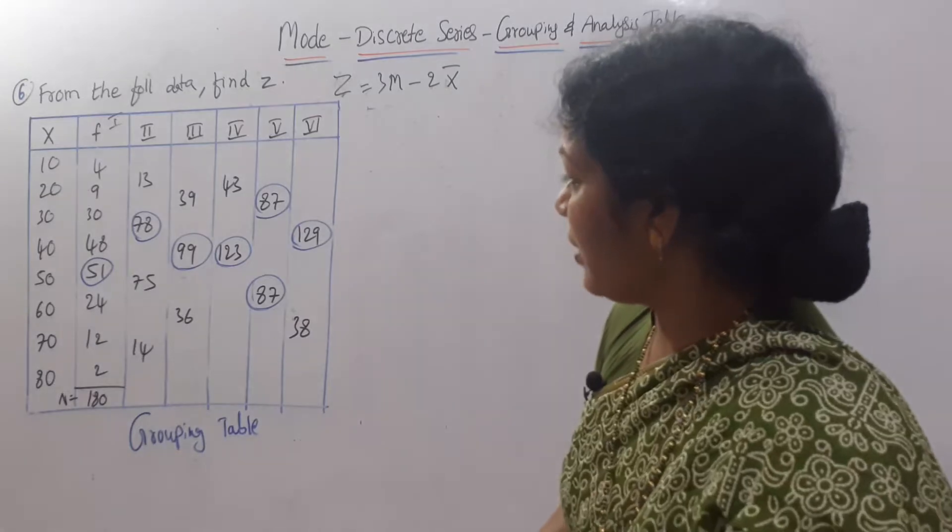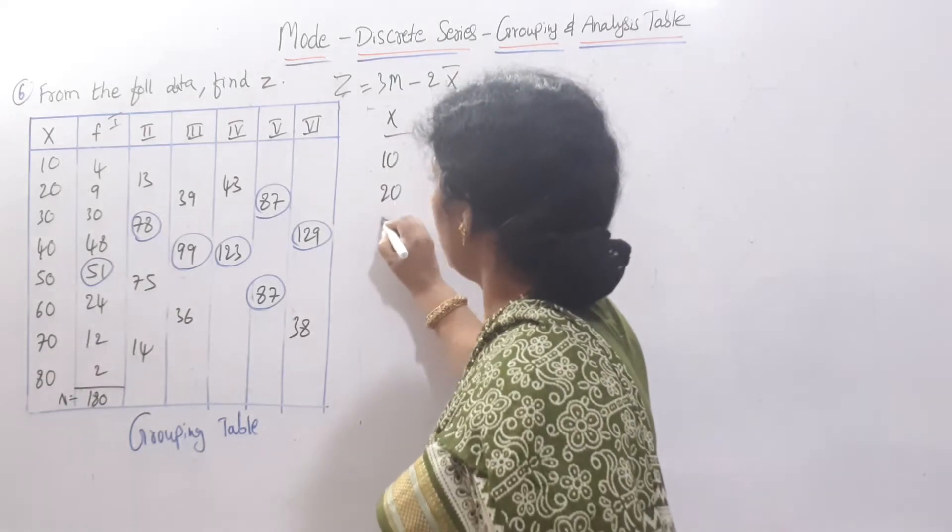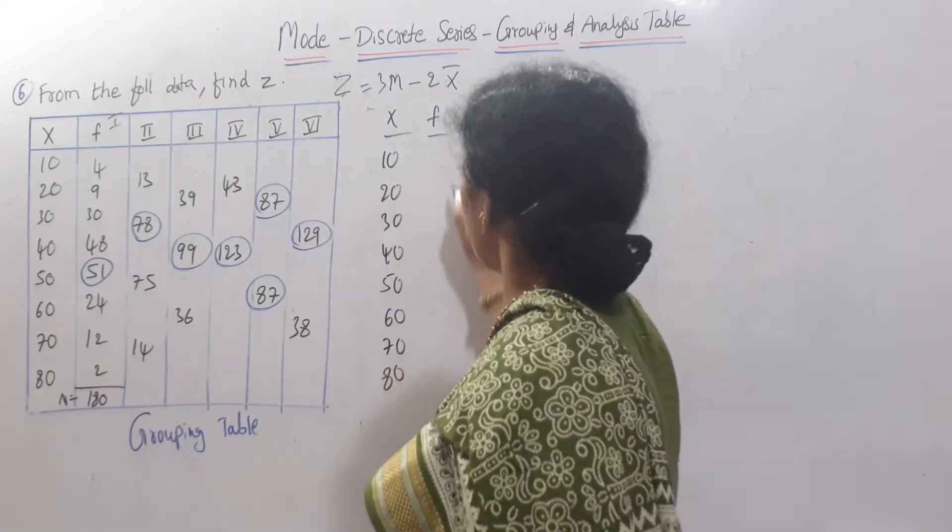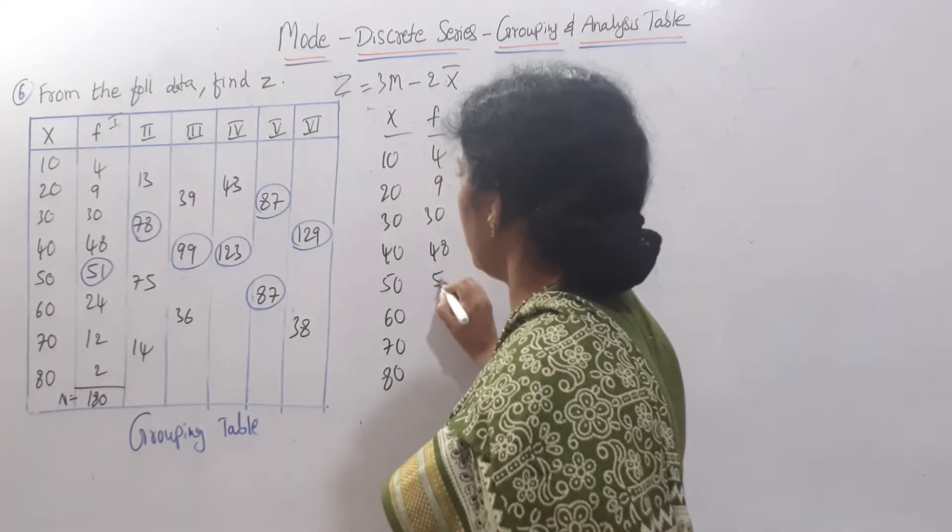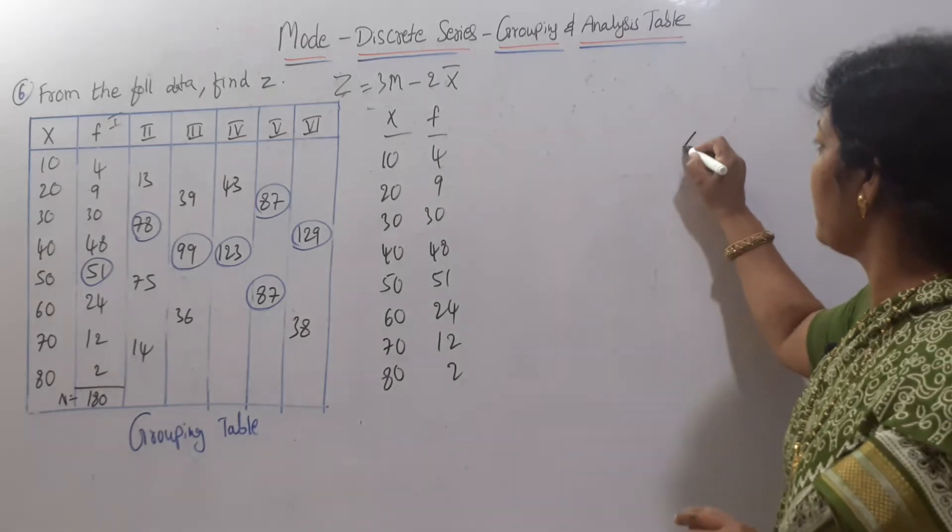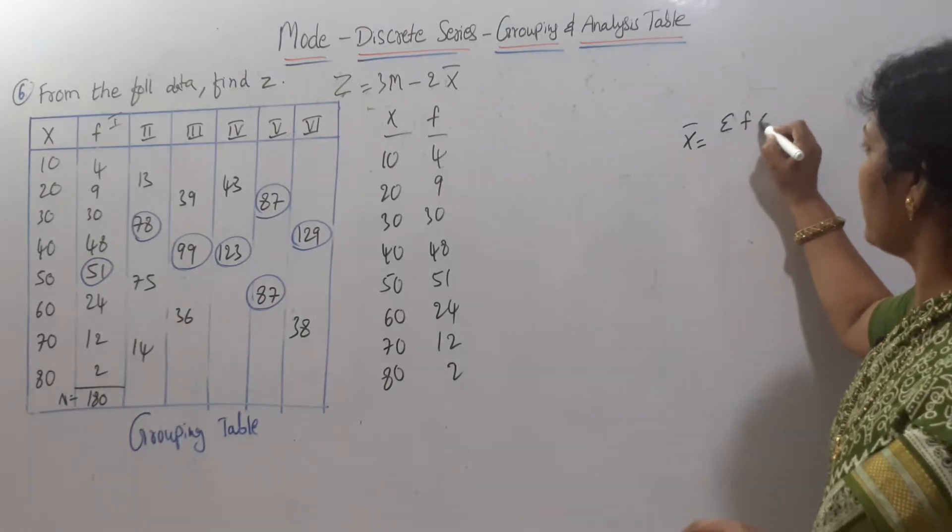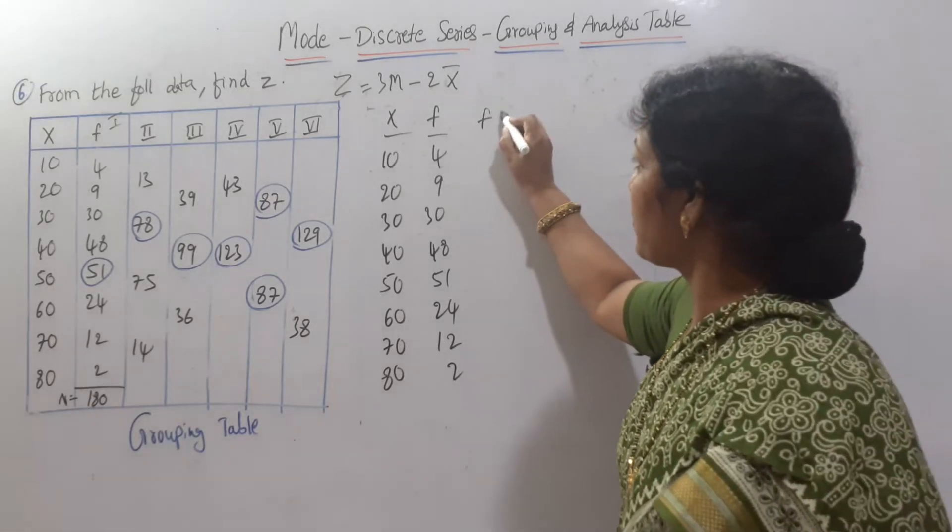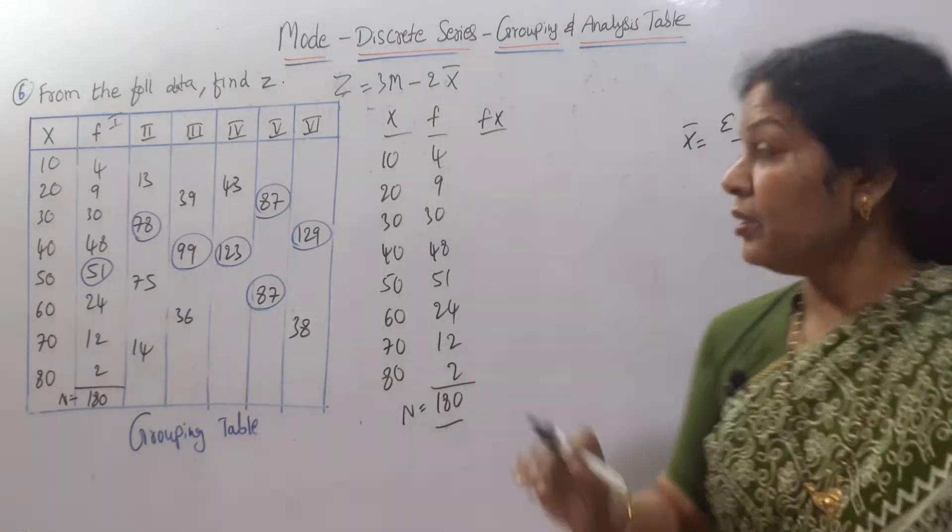Shall we write the data once again? X and frequency: 10, 20, 30, 40, 50, 60, 70, 80. Frequency is here: 4, 9, 30, 48, 51, 24, 12, 2. For calculation of x bar, simple method you can go, sigma fx by n. This is the formula. Sigma fx by n means fx, f into x we have to multiply. This total n is 180.